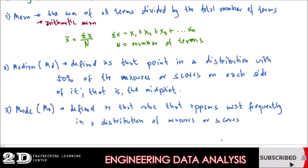Okay, so we have mode. Mode is defined as that value that appears most frequently in a distribution of measures or scores.